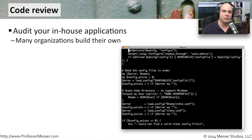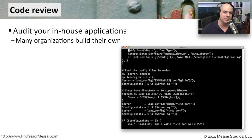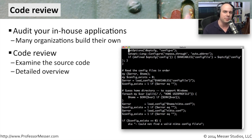Another important security technique is to review the code that you're using in your organization — obviously code that you would have access to. Not all applications will give you their source code; you have to rely on the manufacturer to keep up with security concerns and make sure their code is secure. But for code you're able to see internally — things you've written yourself or source code downloaded from the internet — you're able to go through it and see what is in that code specifically. You may need development experts who are really familiar with understanding the code, and they'll go through it in a lot of detail, breaking it into separate functions and sections.